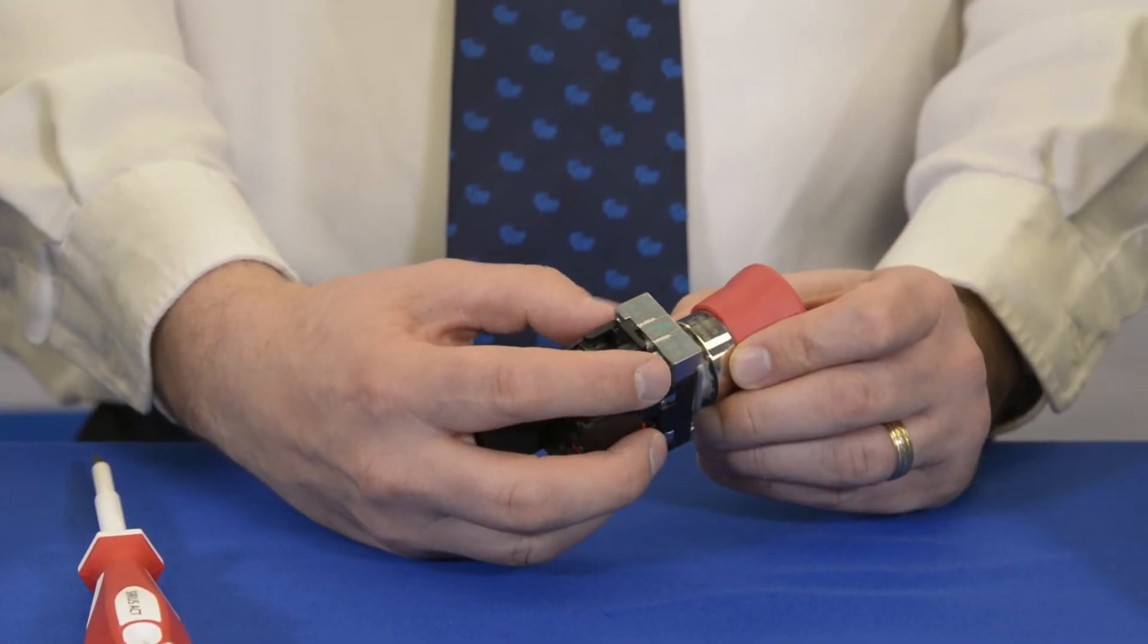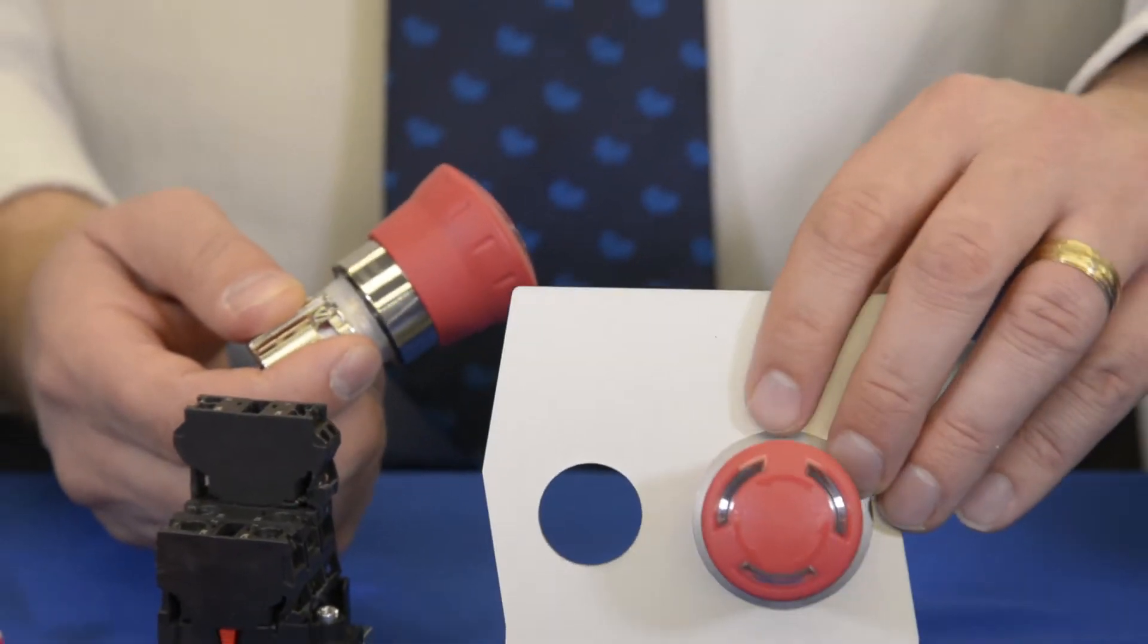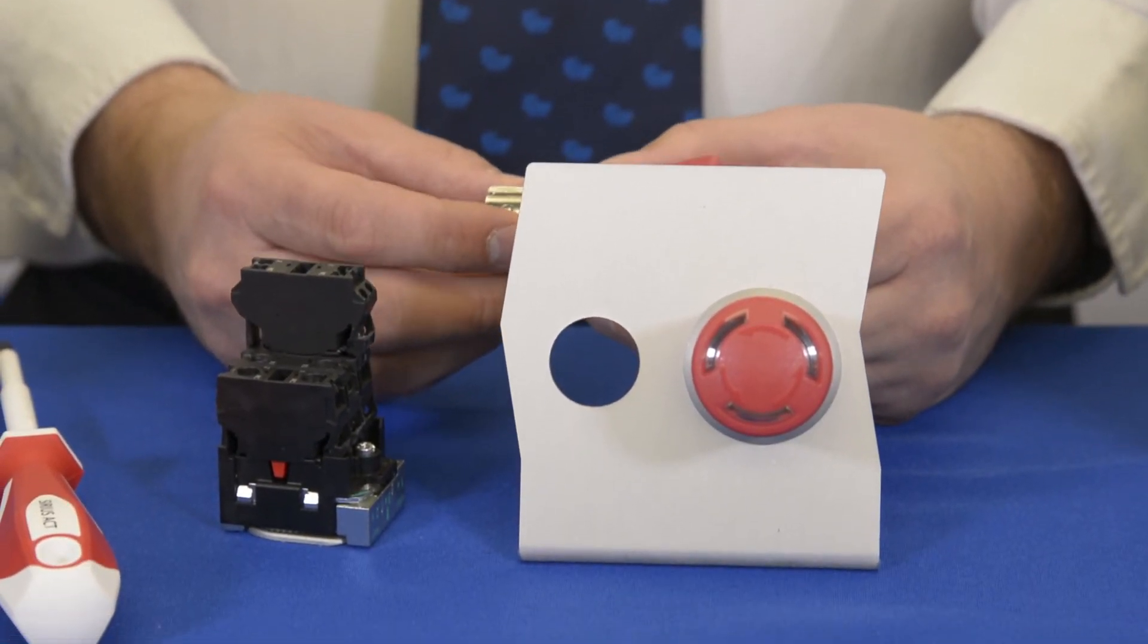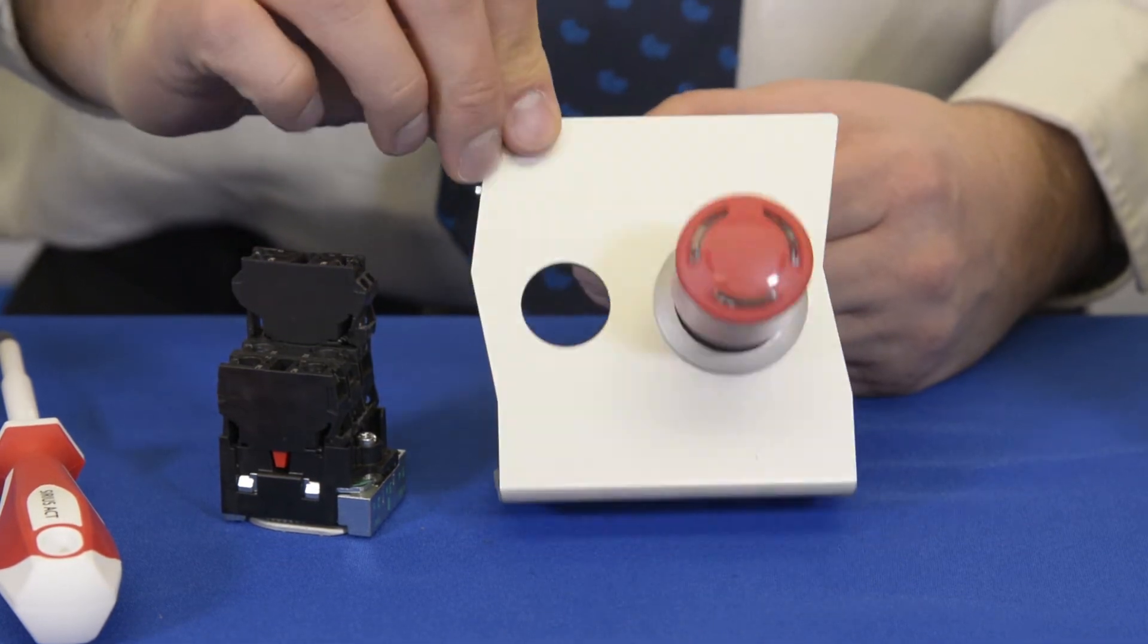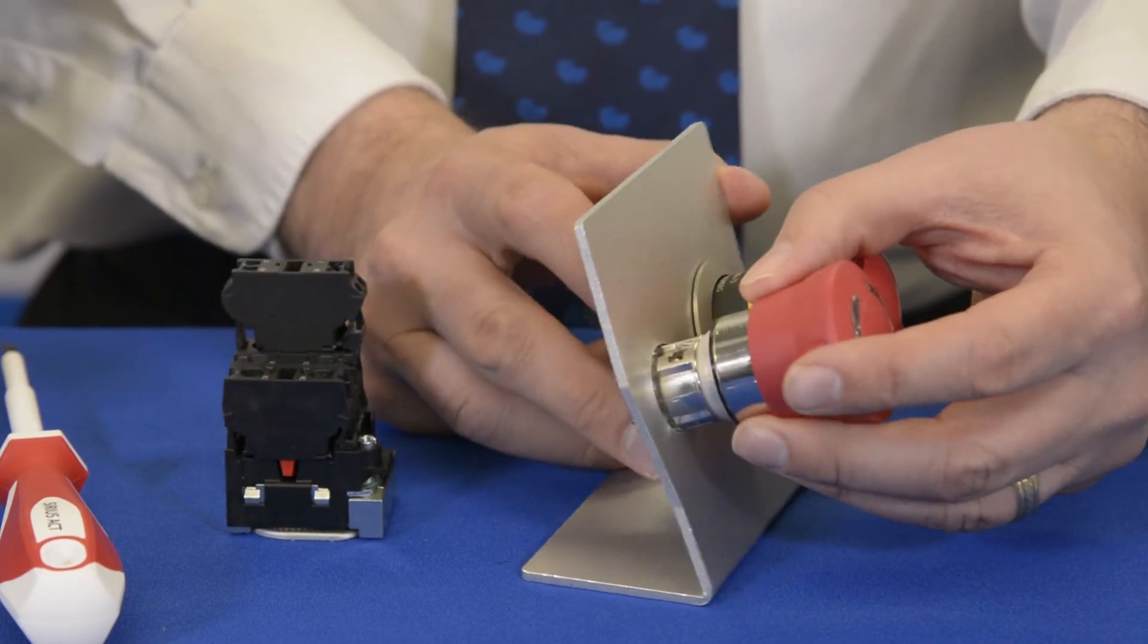See this latch mechanism? We're going to release this latch mechanism for now. I'd like to now show you how to put this assembly into a panel. Let's pretend this is a small Rital enclosure.